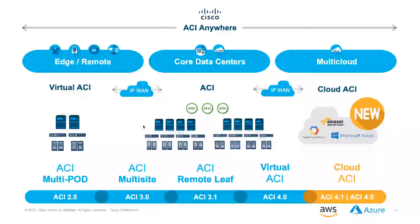Over the last six years, ACI started in the main data center and has evolved outside normal physical data center confines into remote locations, smaller sites, and co-location facilities. We expanded into the public cloud as well — connecting Azure, AWS, or other cloud providers together. Through various ACI versions with multi-site, virtual ACI, and cloud ACI capabilities, we can now provide connectivity across all of those elements with a consistent configuration approach that's easier to automate.